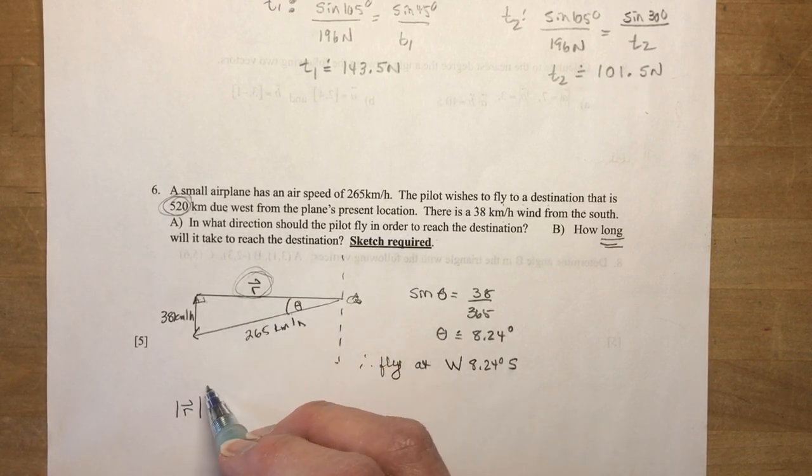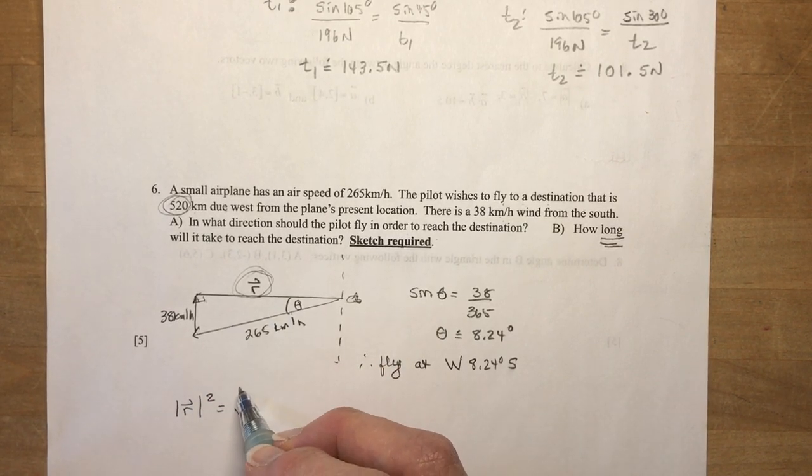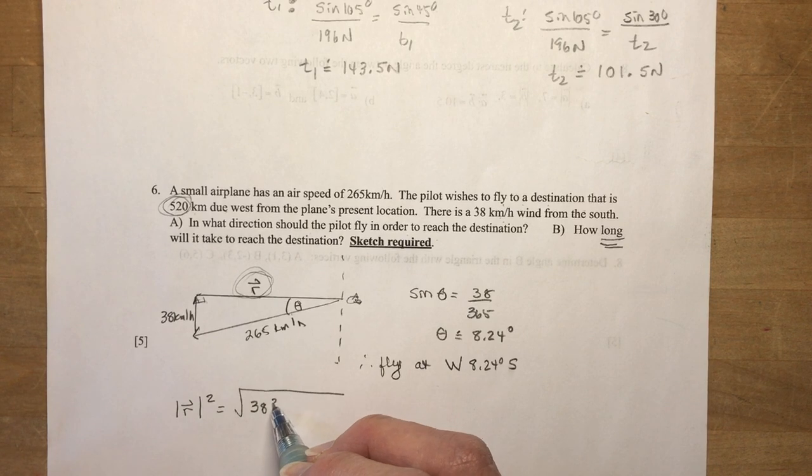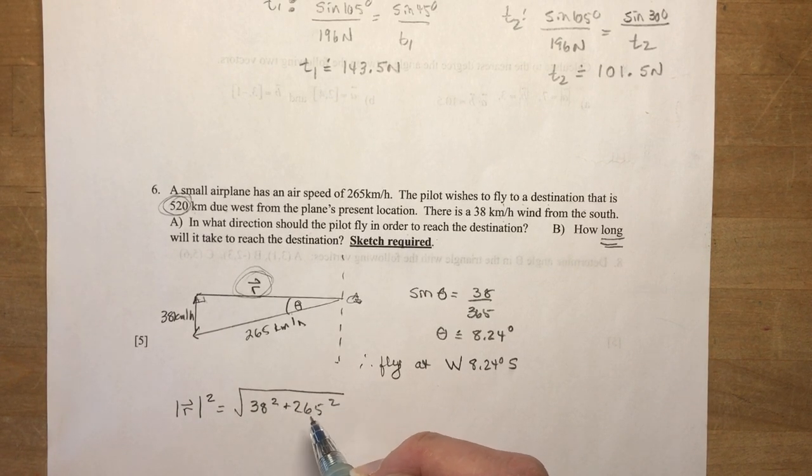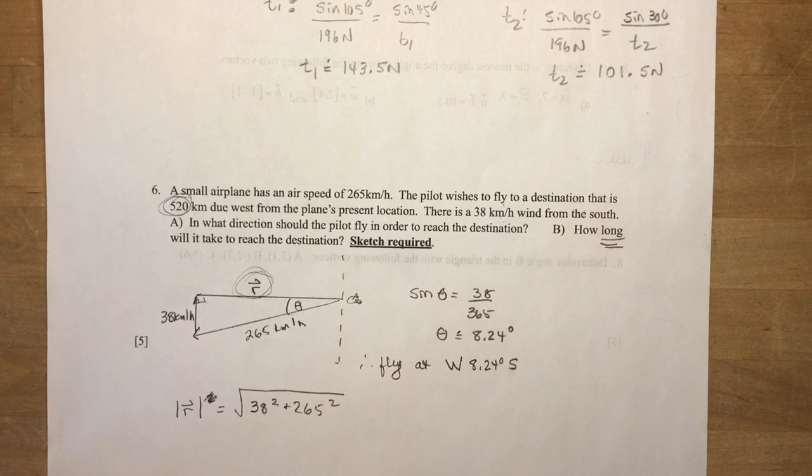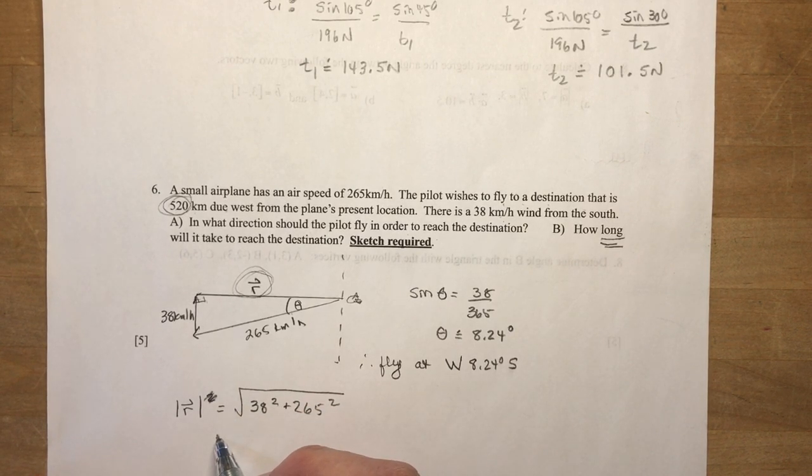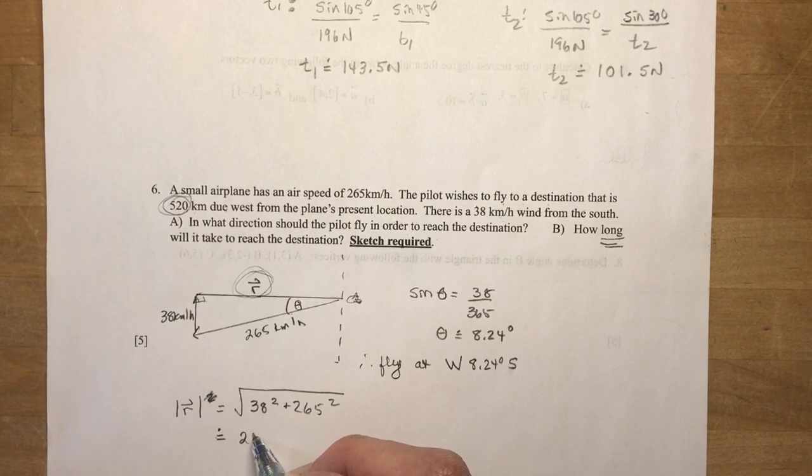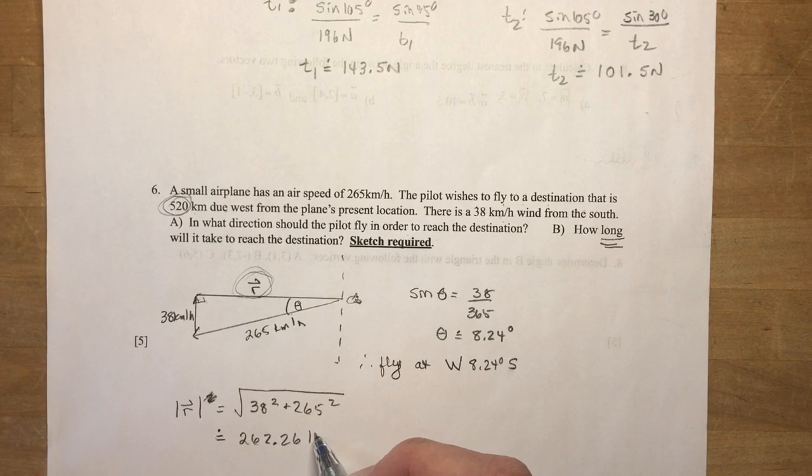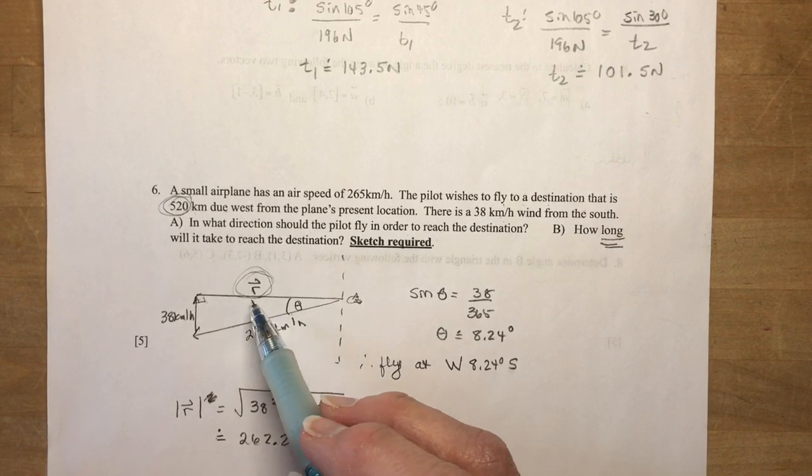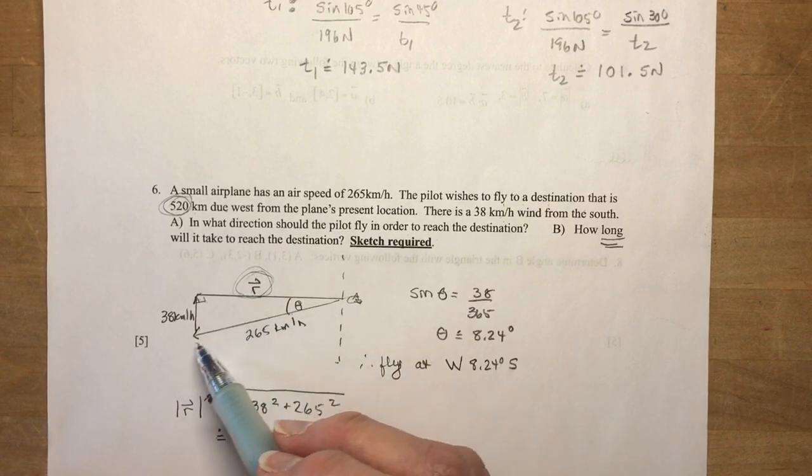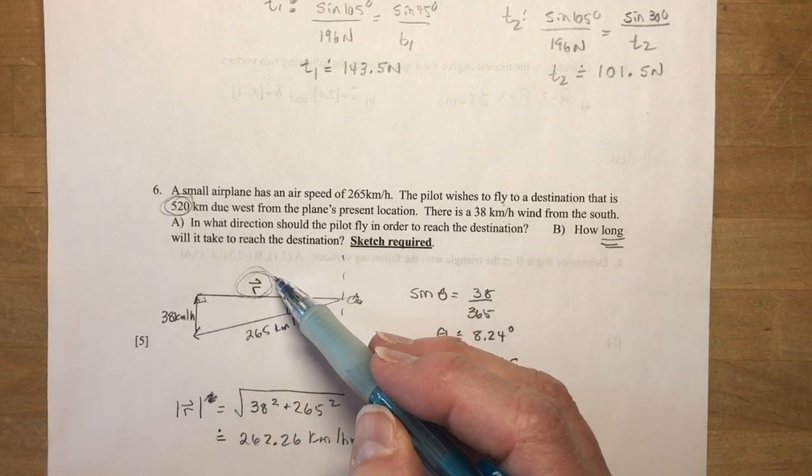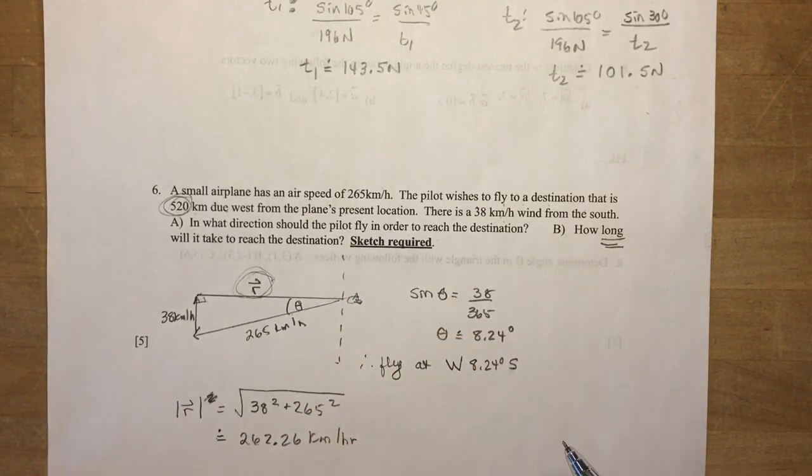So the absolute value of the magnitude of the resultant is going to be the square, well, if I put the square root, then I don't need the square here, but we'll erase that. 38 squared plus 265 squared. Okay, so we didn't need this. I'm just going to stroke it out, which is really bad because that's why you use pencils, because then you can use an eraser. And this comes out to about 262.26 kilometers per hour. So you can see he's going a little slower than his speed. So his ground velocity, because of the wind force, he's going to be slower. And that makes sense because this is the hypotenuse.